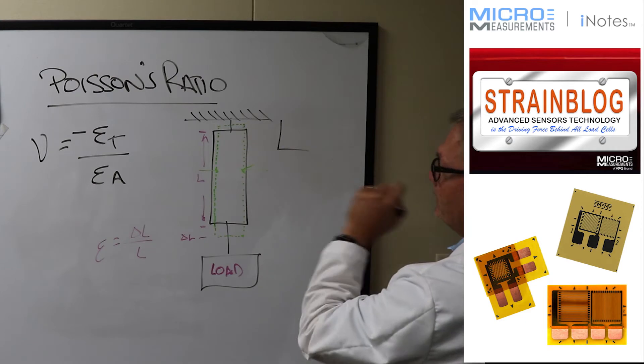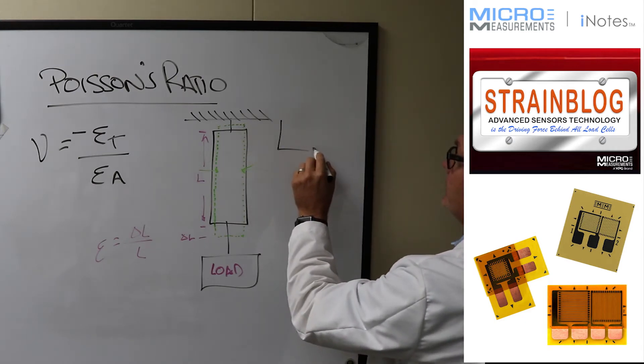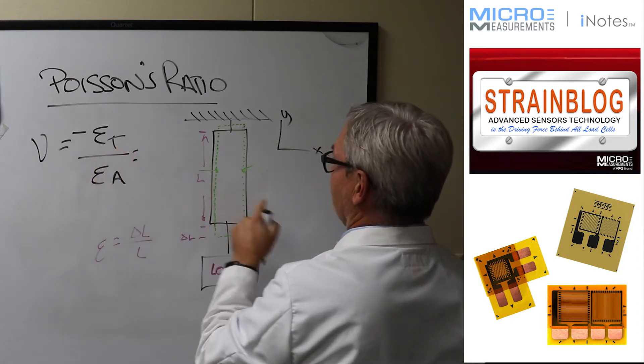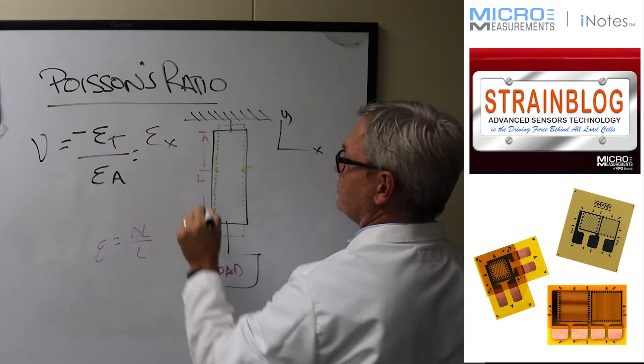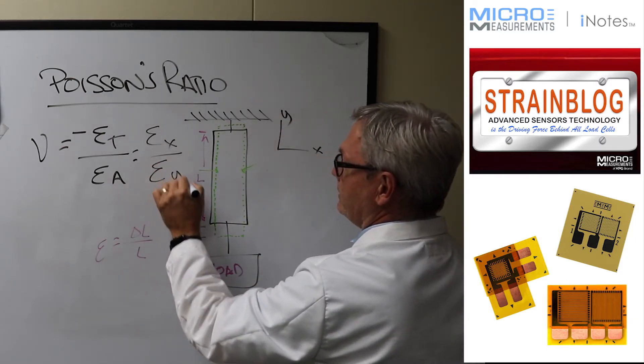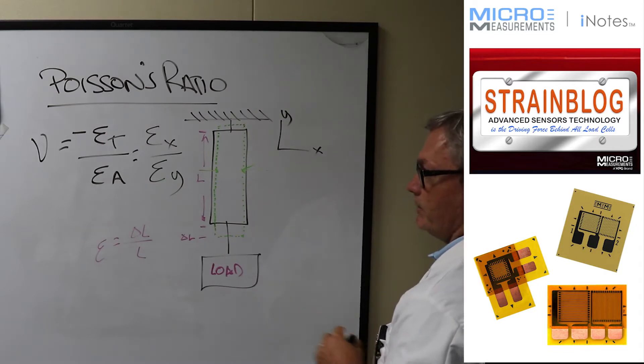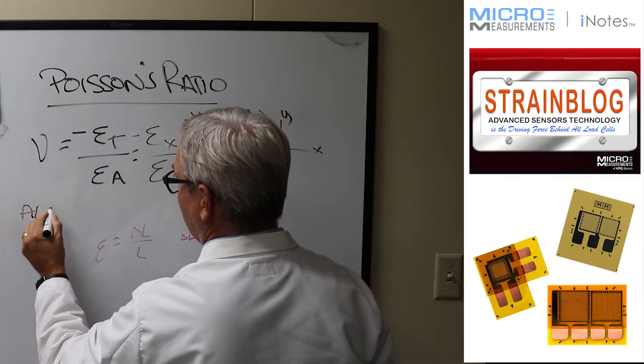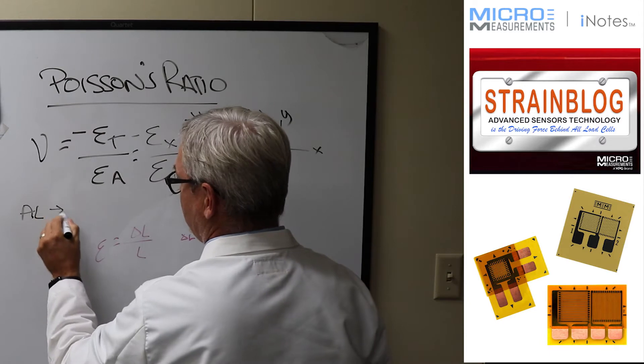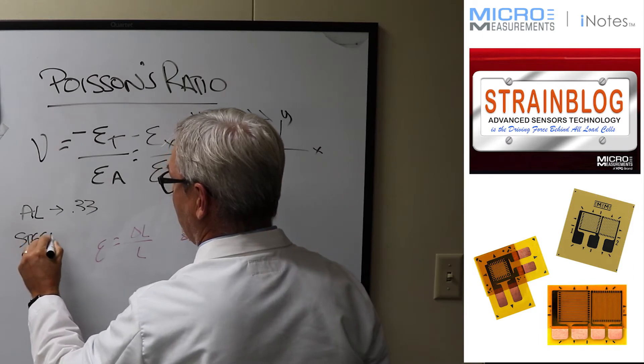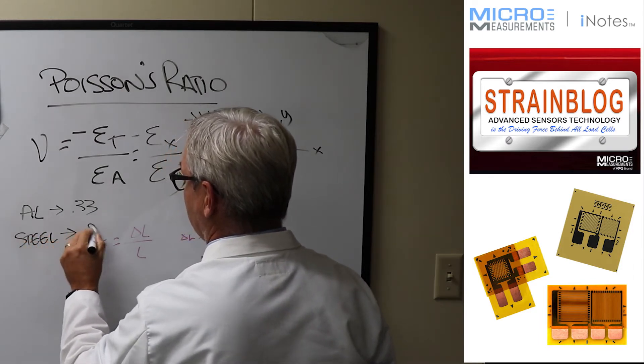So if we draw our coordinates, let's call this one x and this one y, then the strain in the transverse direction is really the x direction. Then the strain that's in the longitudinal direction is the strain that's in the y direction. And again, we typically reverse the sign. Now what you'll find is that for aluminum, the Poisson ratio typically runs about 0.33 and for steel, typically it runs around 0.29.